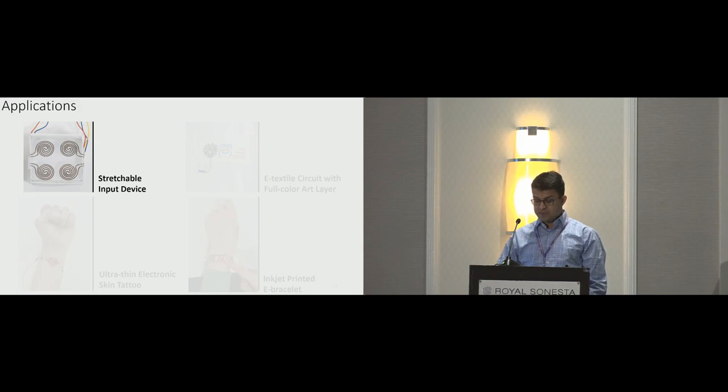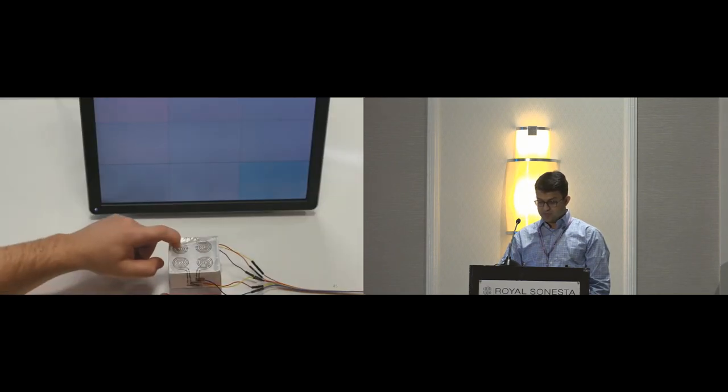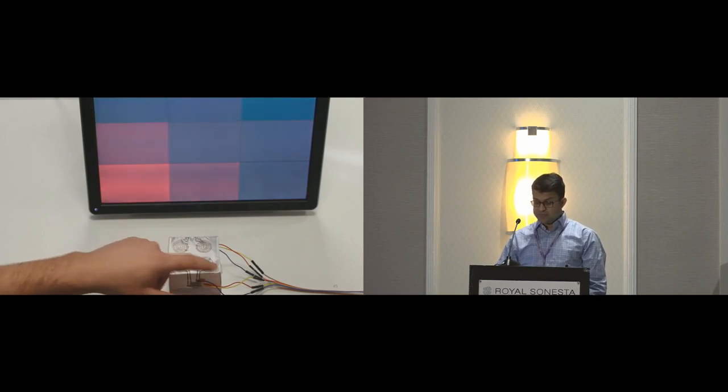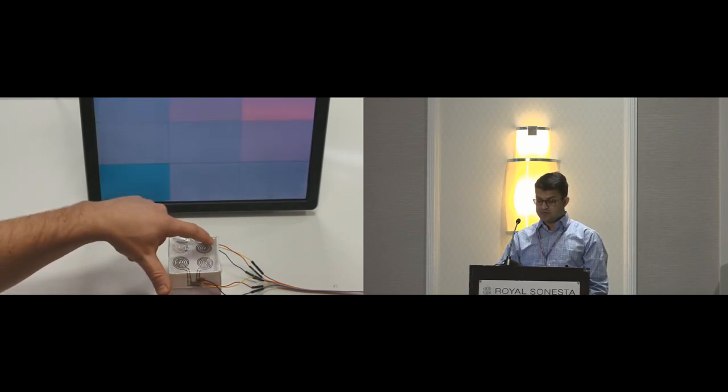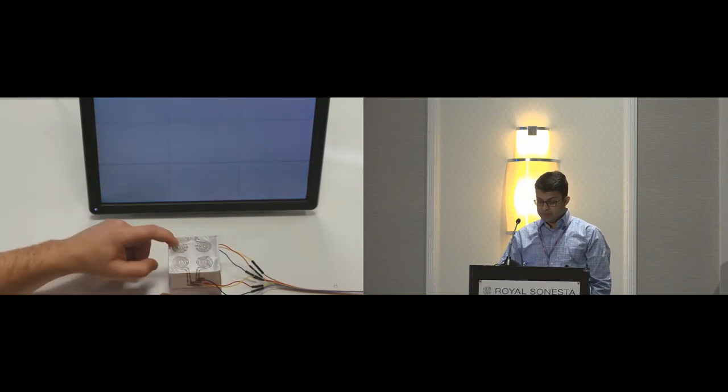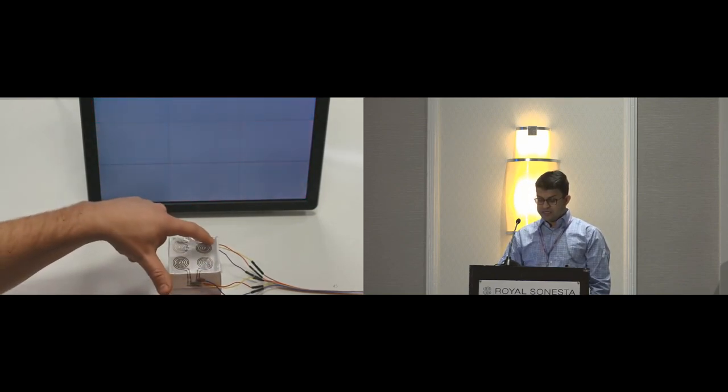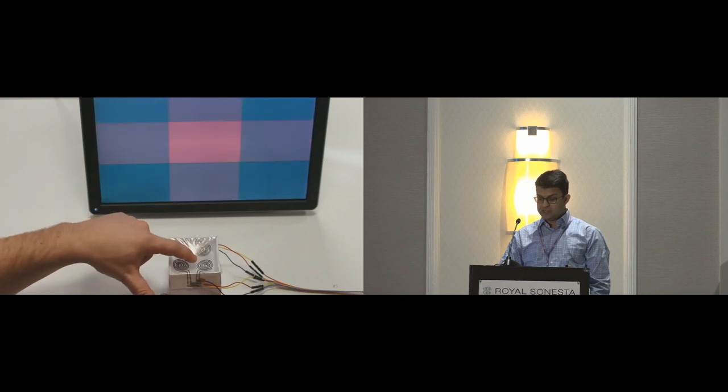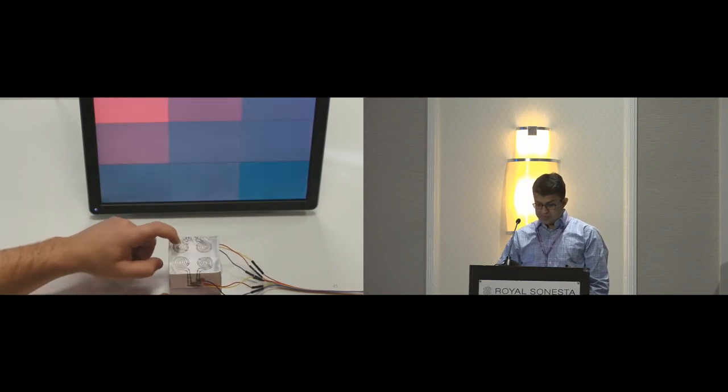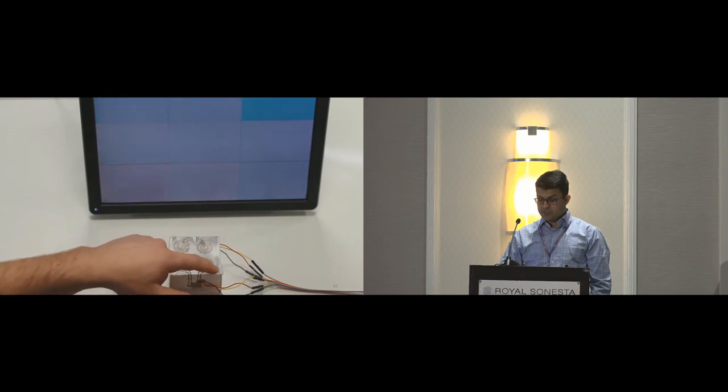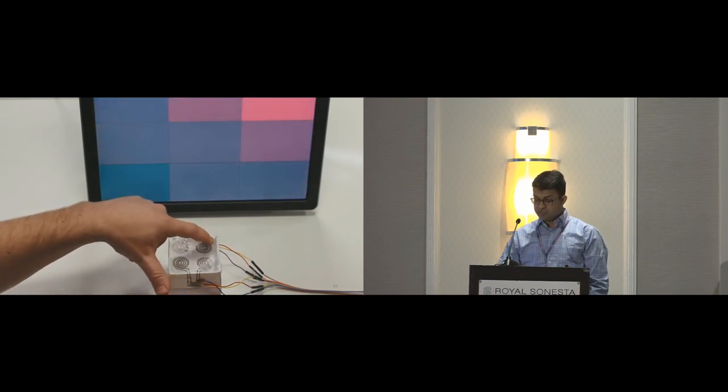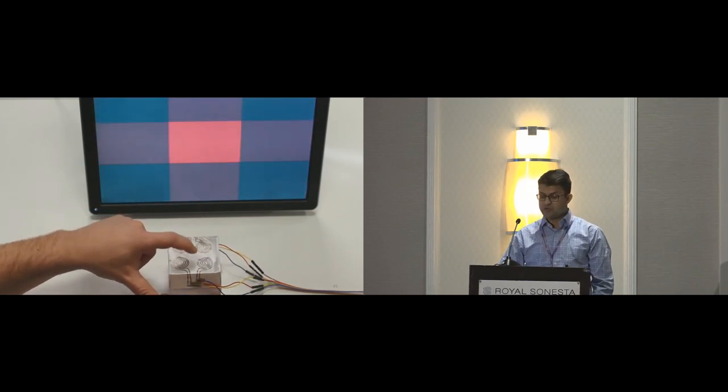The first example demonstrates the rapid fabrication of a stretchable input device. We fabricated this device by printing four resistive strain sensors on stretchable TPU substrates. The sensors are designed in a matrix layout, which allows us to detect deformation input, as shown in this video. The total fabrication process took less than 10 minutes, which shows the ease of use of our approach for rapid prototyping.